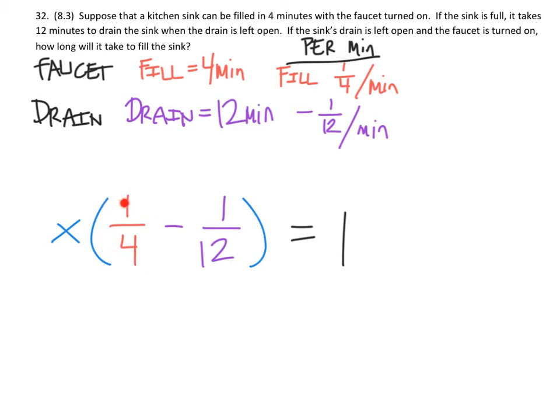And this one-twelfth, the minus one-twelfth, represents how much is drained every minute. So from the problem we know that it is filling faster than it is draining. The thing is we just don't know how long x it's going to take to fill the sink.